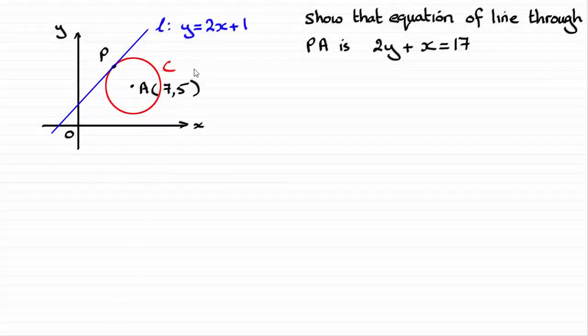So for this question I've just copied down what we were given and we've got to show that the equation of the line through PA is 2y plus x equals 17.